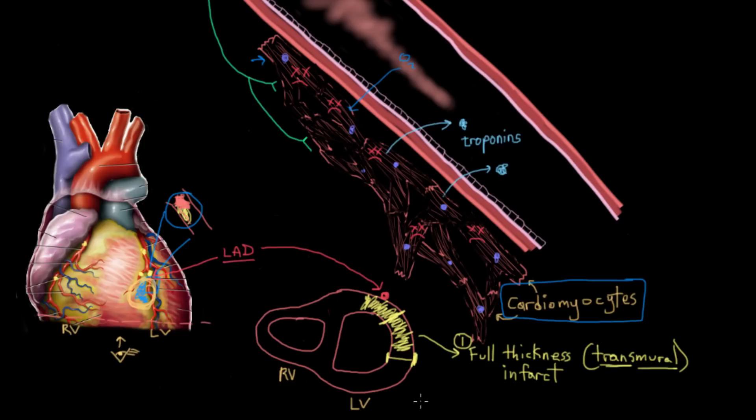And the second kind is called a partial thickness infarct, or a subendocardial infarct. How does that happen? Well, that happens because you'll have these little arteries that come off of the big ones. For example, there'll be this little one that comes off of the left anterior descending, and it will actually penetrate through the heart muscle wall, because the goal of this artery is to supply blood to this little patch here.